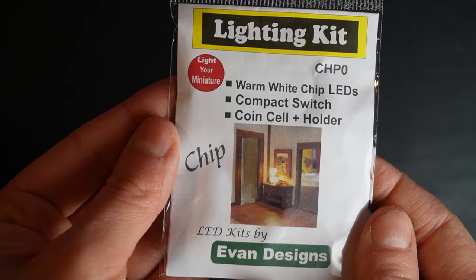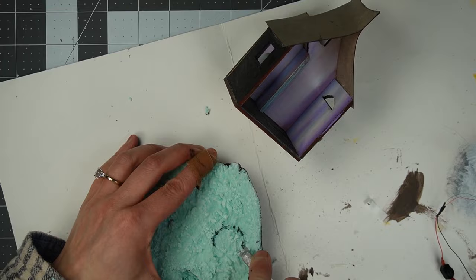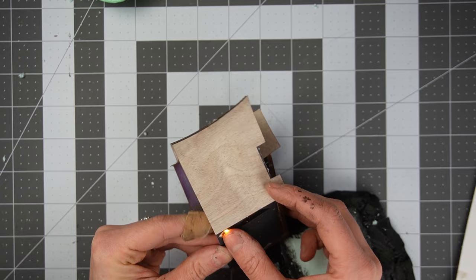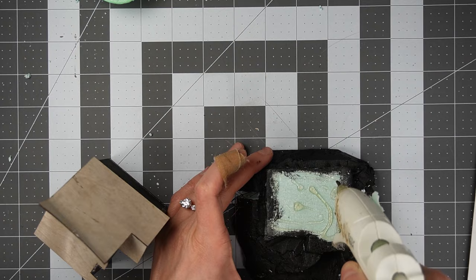This is a lighting kit from a company called Evan Designs. I really love this. All I did was cut some space in my foam base and tuck it in there. I also drilled a hole in the side so I can have a little wall light fixture. I'll make the light fixture later in the video but for now I want to finish up the exterior of the cottage.